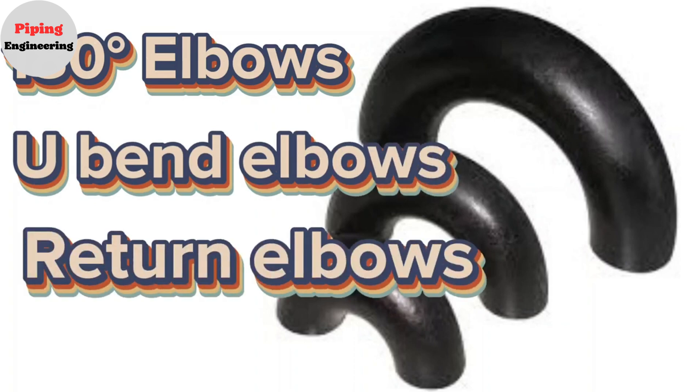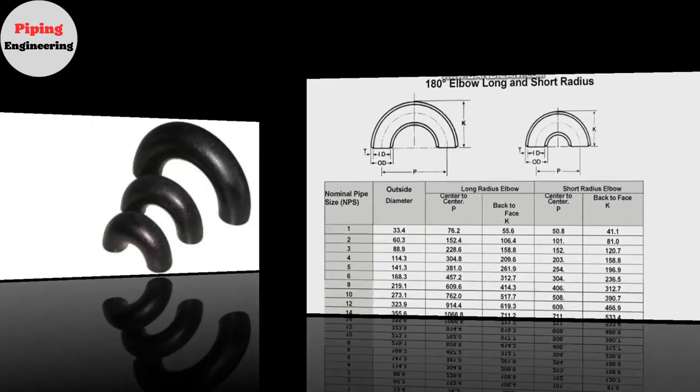Such elbows have both long radius and short radius types, and their sizes are regulated by the standard. Let's look at the standard chart of these elbows.